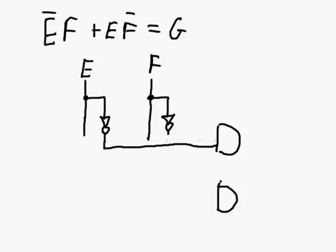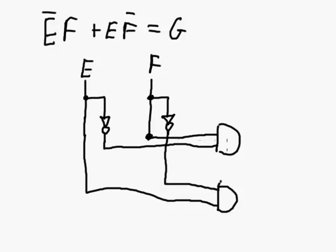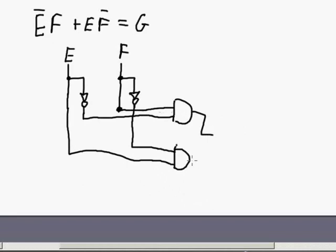Not E connects to that AND gate and F also connects to that AND gate. And then down here, E connects to that AND gate. And not F connects to that AND gate. So there's our product. And the output of the product comes into an OR gate to create our sum. And there's our output G.